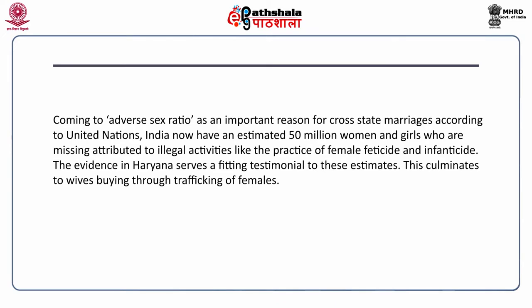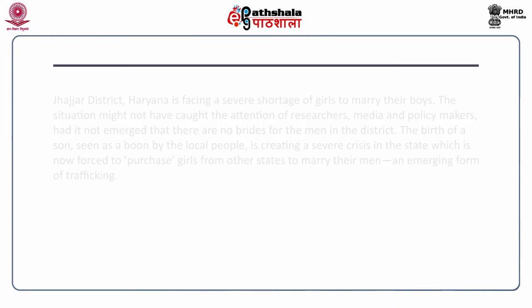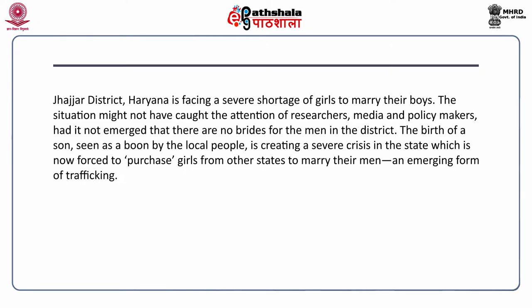Adverse sex ratio is an important reason for cross-state marriages. According to the United Nations, India now has an estimated 50 million missing women and girls, attributed to illegal practices like female feticide and infanticide. The evidence in Haryana serves as a fitting testimonial to these estimates, culminating in the buying of wives through trafficking of females. Jhajjar district in Haryana is facing a severe shortage of girls. The situation caught the attention of researchers, media and policy makers because there are no brides for the men in the district — the birth of a son, seen as a boon, is now creating a severe crisis, forcing the state to purchase girls from other states, an emerging form of trafficking.